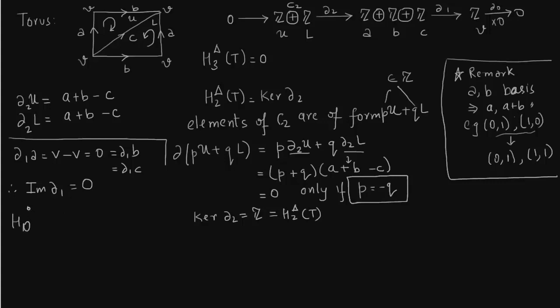So let us first talk about H_0(Δ). Again, image of delta_1 is zero, but kernel is all three elements get mapped to zero. For H_0(Δ), we have kernel of delta_0 over image of delta_1. We have seen the image of delta_1 is 0. Kernel of delta_0 is generated by the vertex v, which is Z, so this is nothing but the ring of integers.